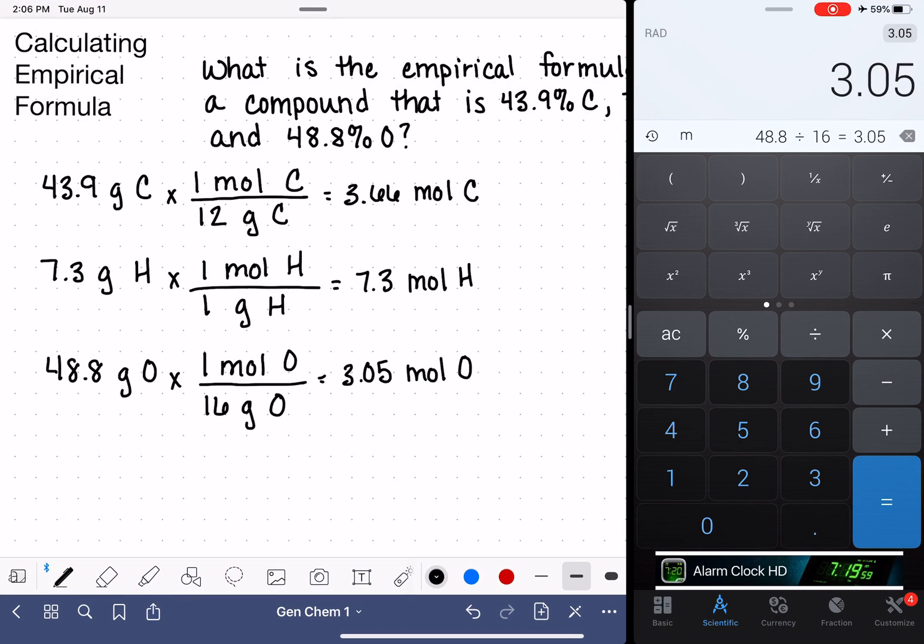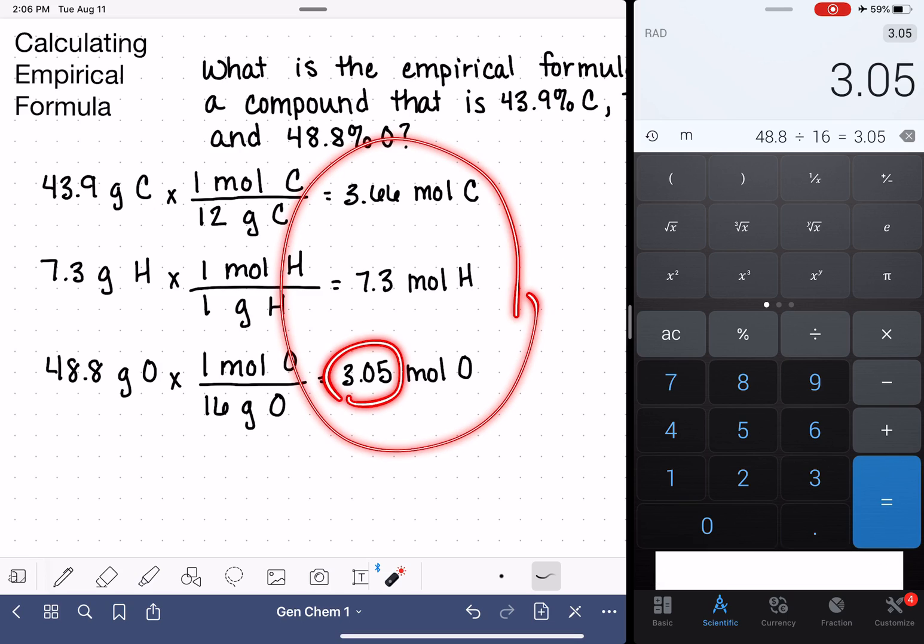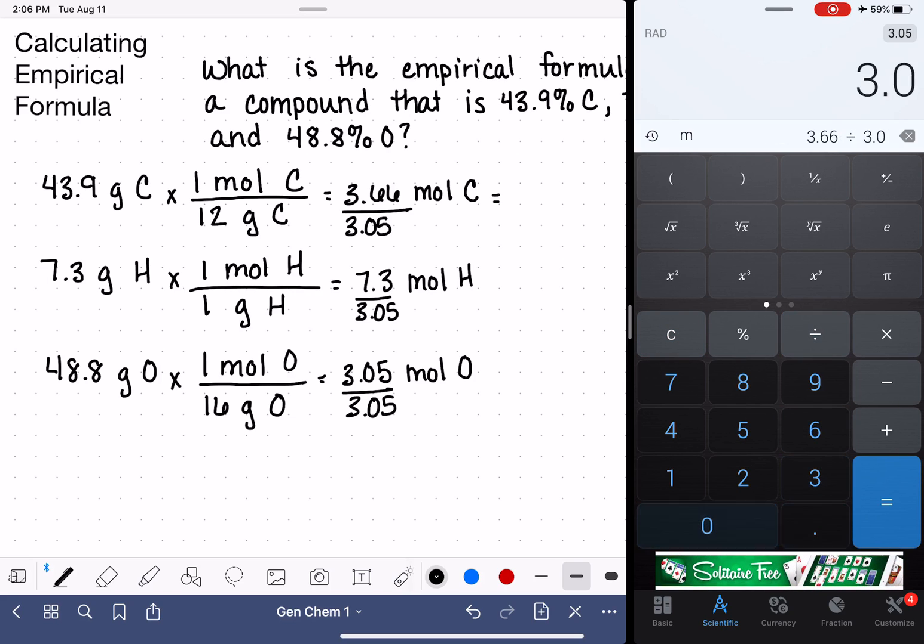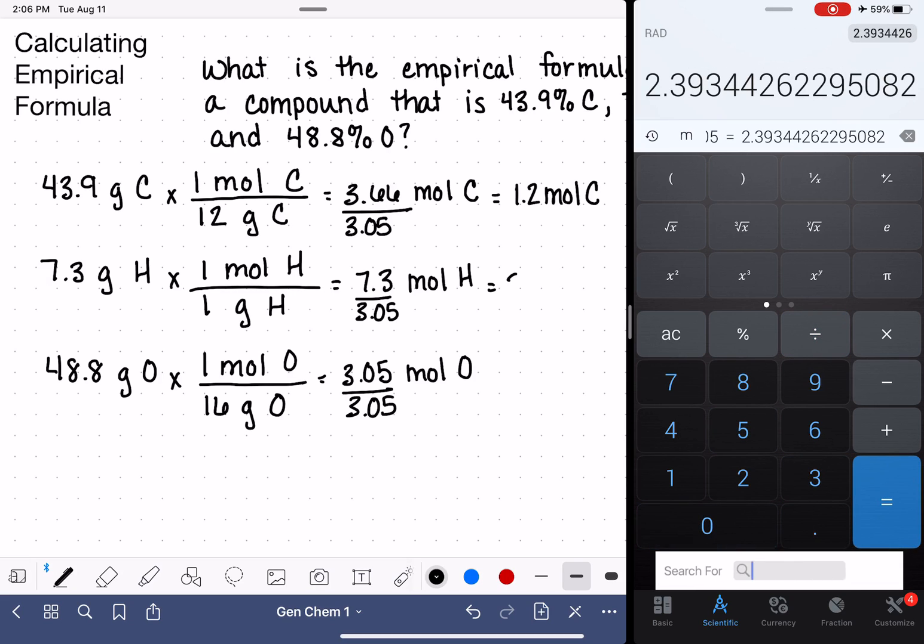So again, we look at these three numbers, we find the smallest, and we divide all of them by that small number, 3.05. So that works out to be 3.66 divided by 3.05 is 1.2 moles of carbon. We have 7.3 divided by 3.05, 2.4 moles of hydrogen, and 1 mole of oxygen.